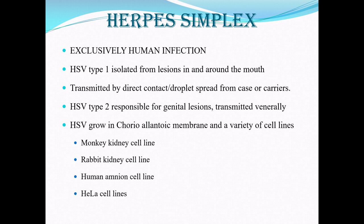Herpes simplex infection is basically only seen in human beings. HSV1 is seen in lesions in and around the oral cavity and is transmitted through direct contact or close droplet spread. HSV2 is responsible for genital lesions and is transmitted through close contact. This virus will grow on the chorioallantoic membrane in egg cultures, and you can grow it in different cell lines: monkey kidney, rabbit kidney, human amnion, or HeLa cell lines.